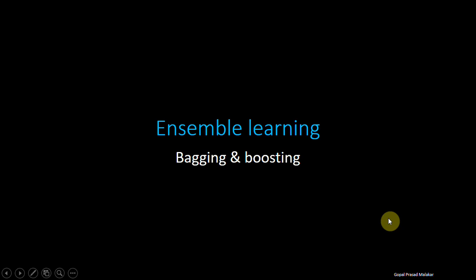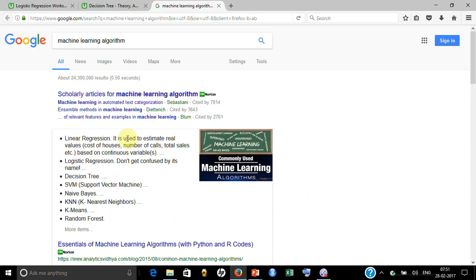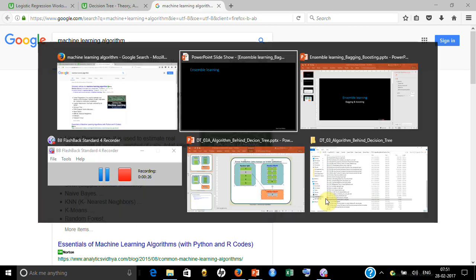Let me introduce you to ensemble learning and explain what is bagging and what is boosting. Ensemble learning is a term used in the context of machine learning. Machine learning uses various algorithms like linear regression, logistic regression, decision tree, k-means, random forest, and ensemble learning is actually the application of group learning.